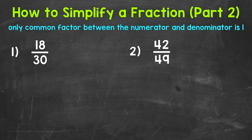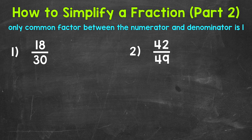For 18 thirtieths, we need to start by thinking: are there any common factors between 18 and 30? Well, they are both even, so we can divide them both by two and start breaking the fraction down that way. But let's try to think of a larger common factor in value other than two, because that way it's going to take fewer steps to simplify. You want to find the largest factors in value that you can.